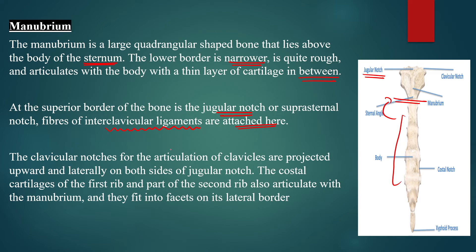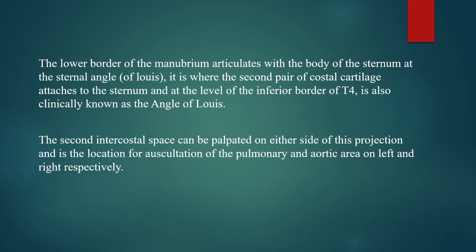The clavicular notch is for the articulation of the clavicle — your S-shaped collar bone — projected upward and laterally on both sides of the jugular notch. The costal cartilage of the first rib and part of the second rib also articulate with the manubrium, fitting into facets on its lateral border. These first and second ribs articulate in these regions on the lateral border.